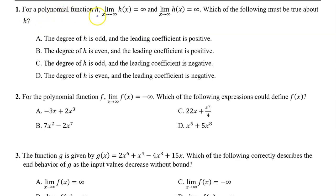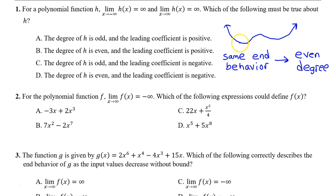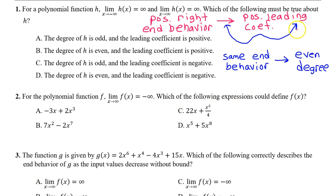Number one: for polynomial function h, the limit as x approaches negative infinity of h(x) is infinity, and the limit as x approaches positive infinity of h(x) is also infinity. Which of the following must be true about h? h is approaching positive infinity on the left — it is rising on the left — and rising on the right as well. The fact that the end behavior is the same on both sides, positive infinity both times, means that the degree has to be even. In addition, the end behavior on the right tells you whether the leading coefficient is positive. So the answer is B: the degree of h is even and the leading coefficient is positive.